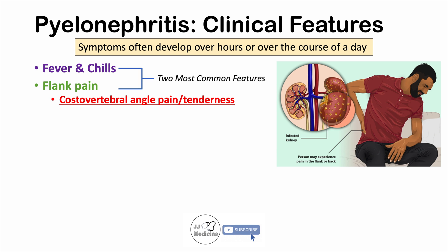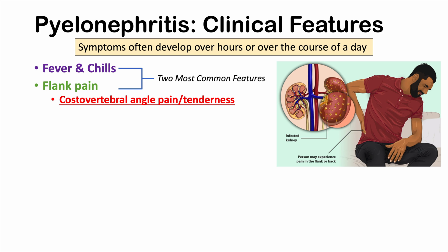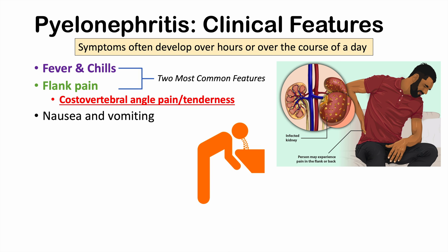Very importantly, with acute pyelonephritis we see what is called costovertebral angle pain or tenderness. This is assessed by tapping on the back in the location of the kidney, at the lower edge of the rib cage. If the patient feels tenderness in that location, it is very suggestive of acute pyelonephritis. We can also see nausea, vomiting, and anorexia — a loss of appetite.